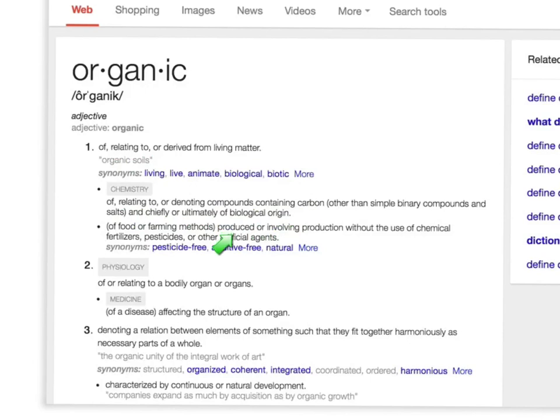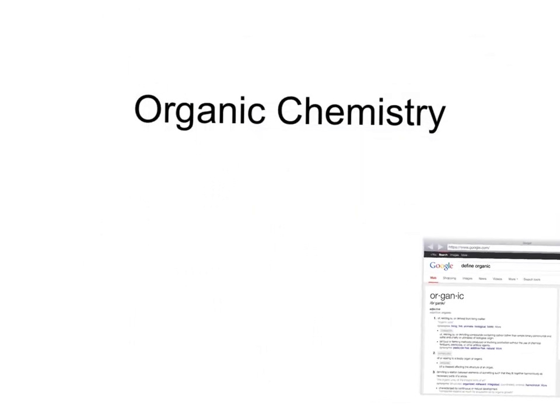In food or farming, you probably hear this word used a lot to describe organic foods. It's produced involving production without the use of chemical fertilizers, pesticides, or artificial agents. That's why organic food costs more. And if you've been paying for organic food, you probably want to know what you've been paying for because it's more expensive. After this lesson, you'll understand what organic means a little more deeply.